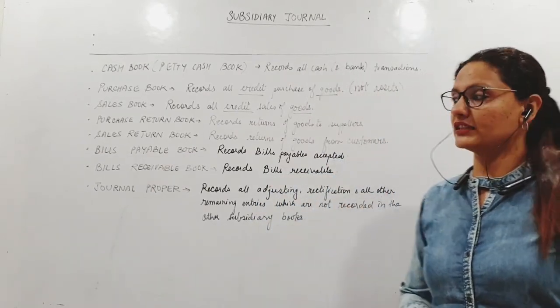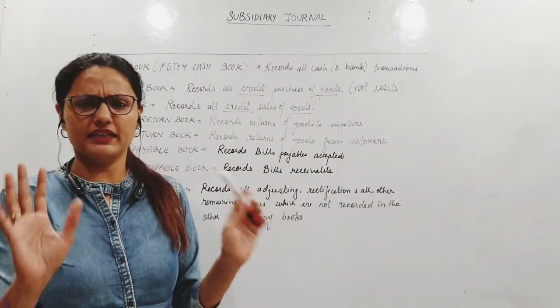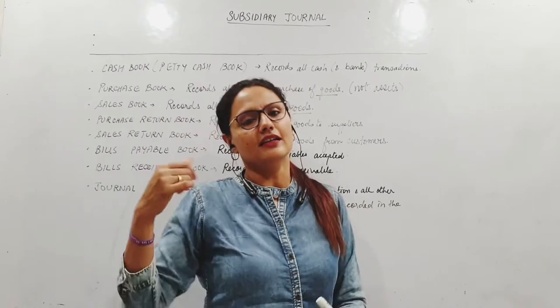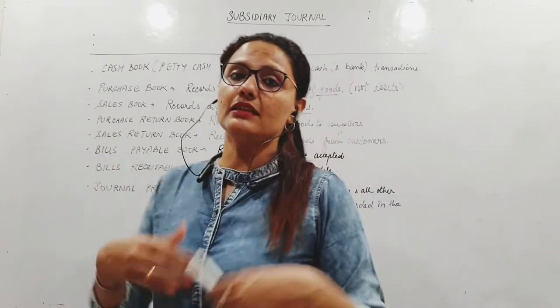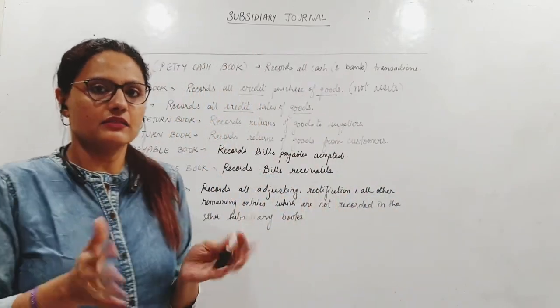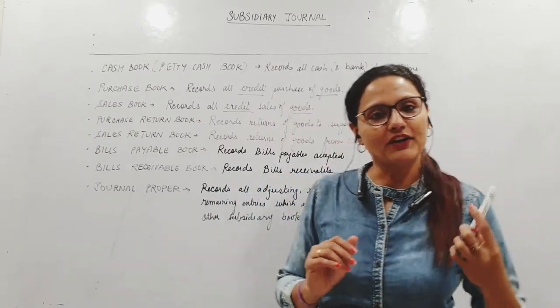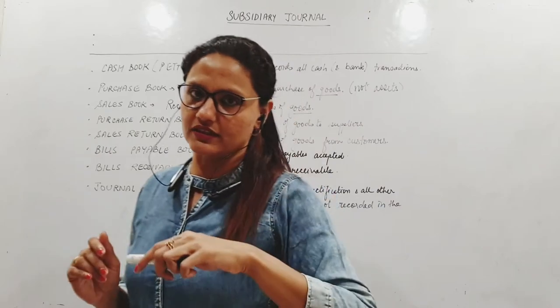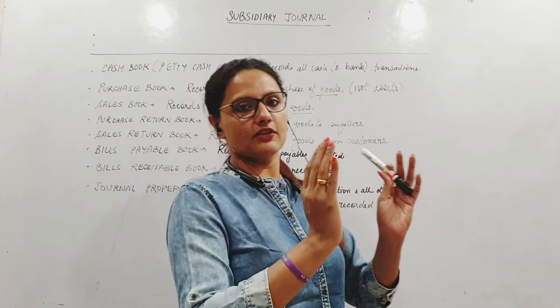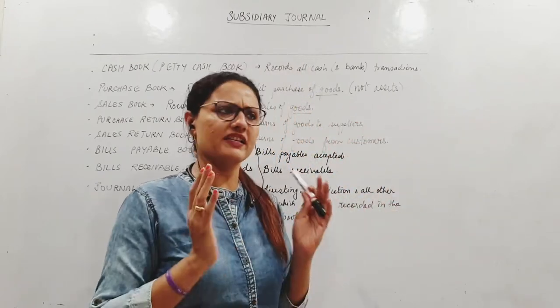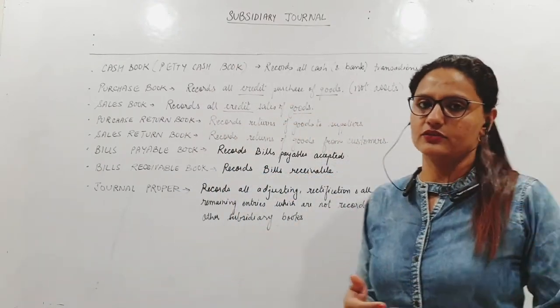Bills payable and bills receivable - this is another concept. When I sign a bill, a document. Bill payable is something I have to pay, it's a liability for me. My creditors - what are creditors? People from whom I buy on credit. If I give a writing that I will pay you such and such amount after two months, three months, whatever specified period, that is called a bill. It's a liability, so it's for my creditors.